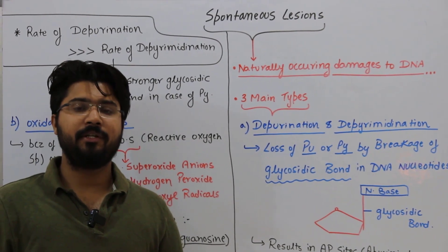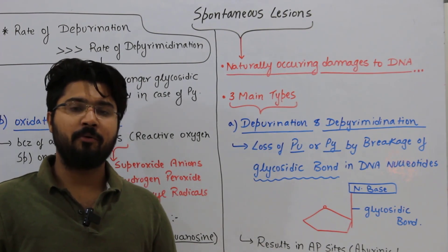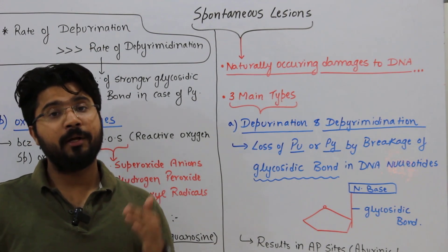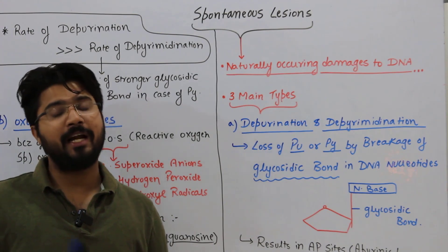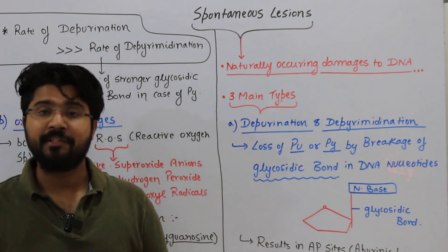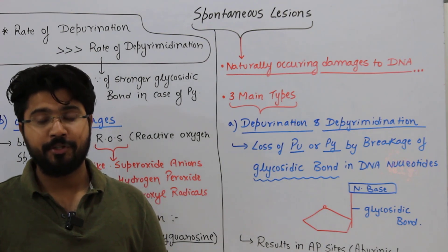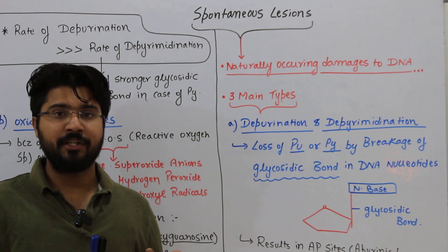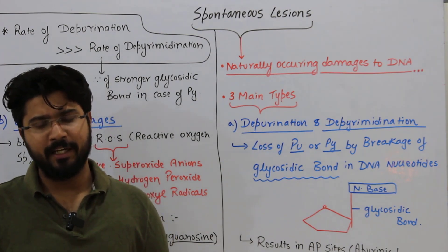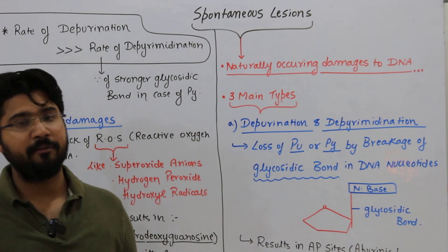Welcome back to the lecture series by Biogenesis. In this lecture of molecular biology, part 3 of mutations, we will be discussing spontaneous lesions as a common reason for spontaneous mutations. In part 1 and part 2 we covered spontaneous and induced mutations, and replicative error. This lecture will discuss spontaneous lesions and, at the end, transposable elements, finishing all reasons for spontaneous mutation.